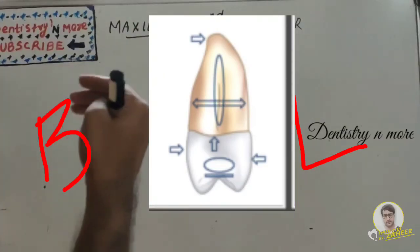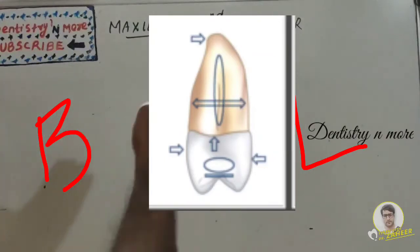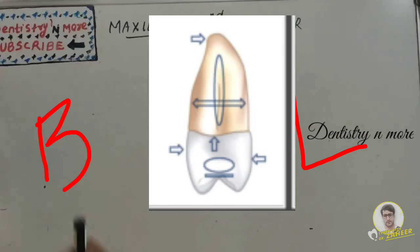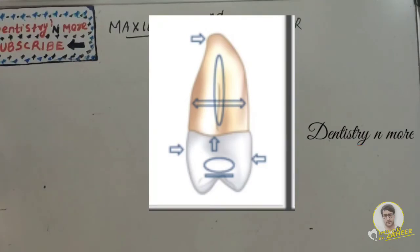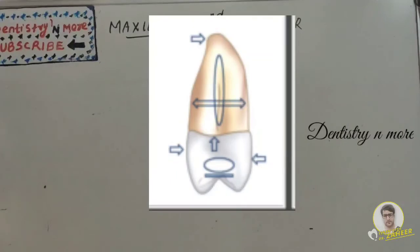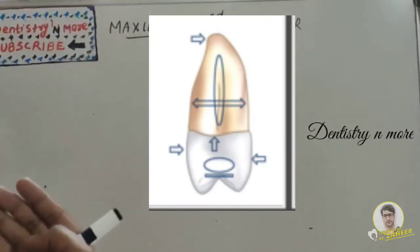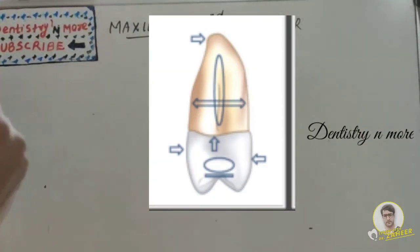On the lingual side, the crest of curvature is at the middle of the middle one-third. The mesial aspect is slightly convex and smooth with no depressions. The mesial marginal ridge is more occlusally positioned than the distal marginal ridge, as with other teeth. The cervical line is concave with respect to the root. From the mesial side, the root is single, broad buccolingually, with a relatively blunt apex, and there is a shallow developmental depression.